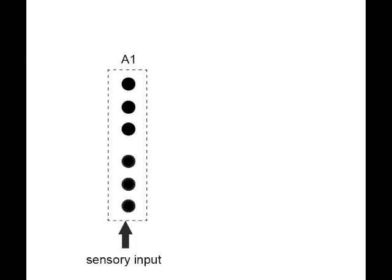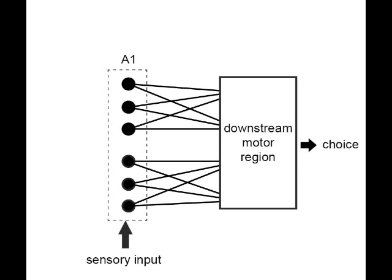Finally, we designed a computer simulation of theoretical auditory neurons in a network. These neurons project to a downstream region, possibly the striatum, to convert representations of sound stimuli into the required motor actions.